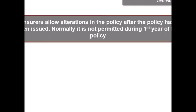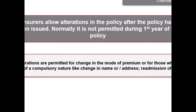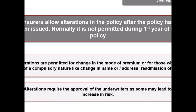Let us understand the concept of alteration. Insurers allow alterations in the policy after the policy has been issued. Normally, alterations may not be permitted during the first year of the policy. However, there are certain exceptions. Alterations are permitted for change in the mode of premium or for those which are of compulsory nature, like change in name or address, readmission of age in case it is proved higher or lower, request for grant of double accident benefit or permanent disability benefit, and so on. Alterations require the approval of the underwriters as some may lead to increase in risk.